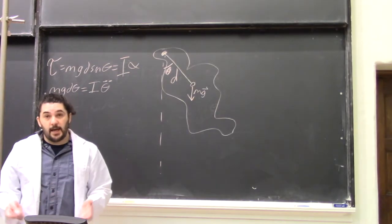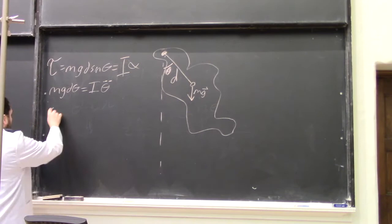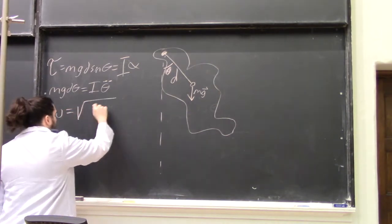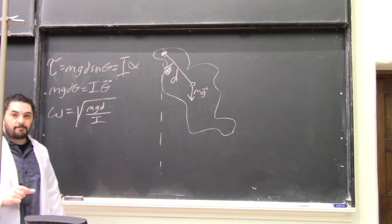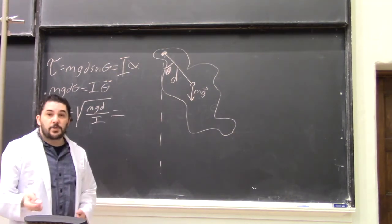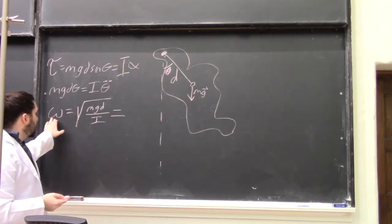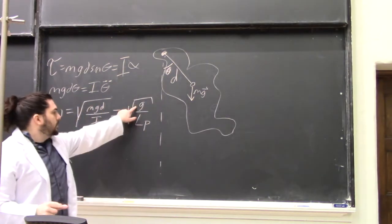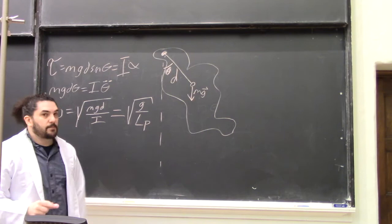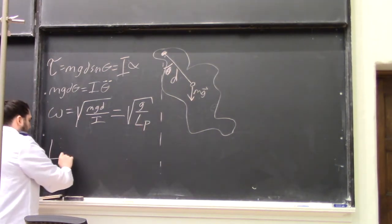The solution to which is a sine with omega root MGD over I. So to find the equivalent simple pendulum, we just look for a simple pendulum with the same omega, just root G over the length of the pendulum. So if we solve this for the length of the pendulum, it's I over MD.